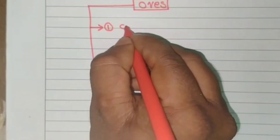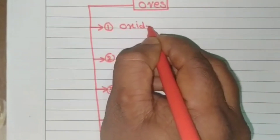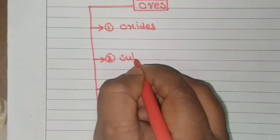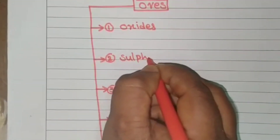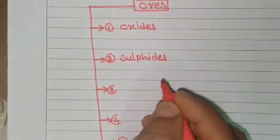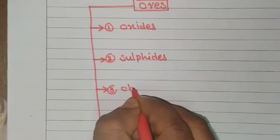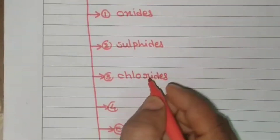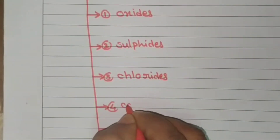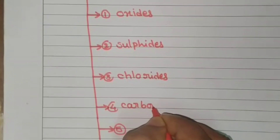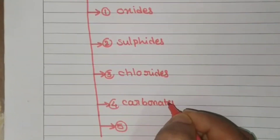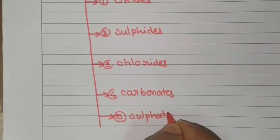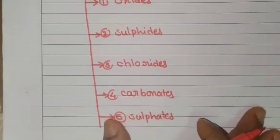The five types of ores according to our textbook are: first, oxides; second, sulfides; third, chlorides; fourth, carbonates; and fifth, sulfates. Totally five types.